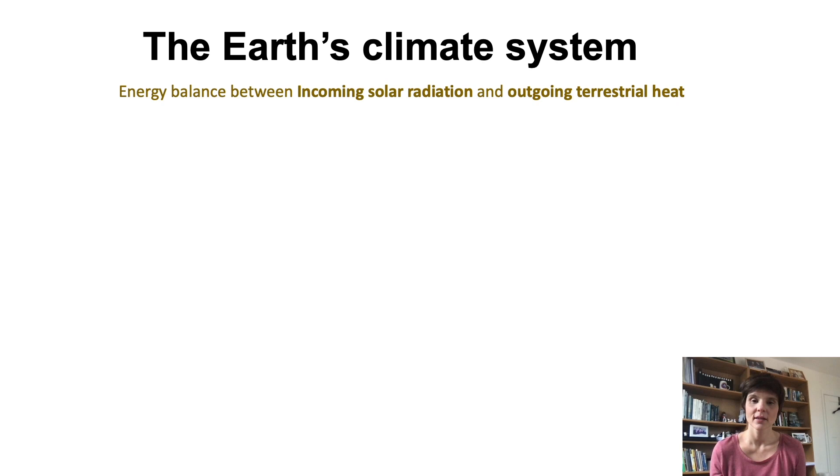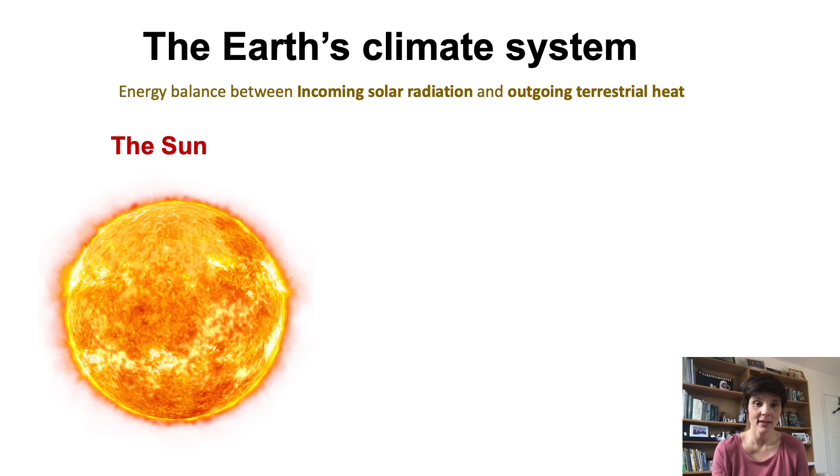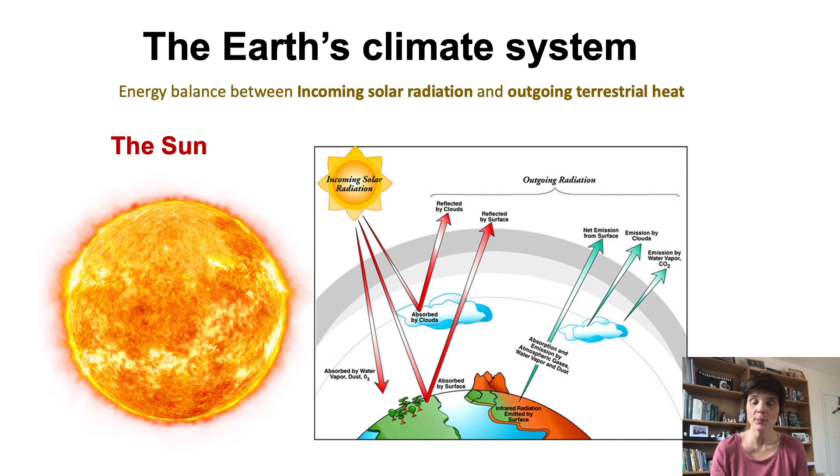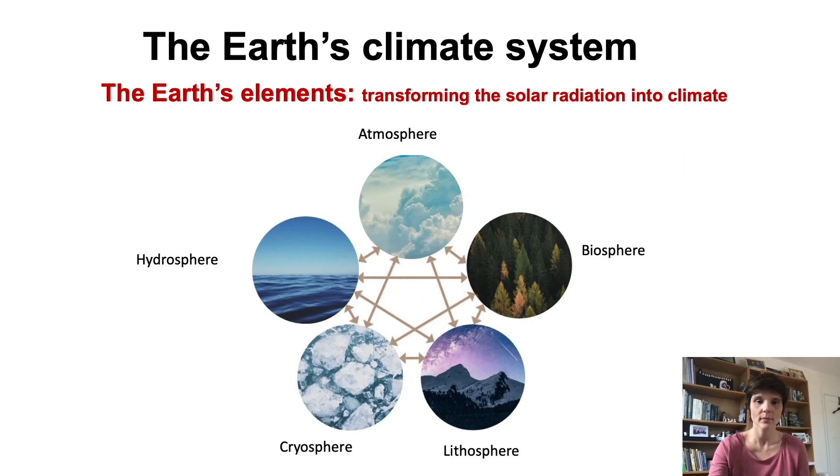The Earth climate system is an energy system which is driven by the sun. So the sun is the main source of energy, the engine of the climate. We can define the Earth climate system as the energy balance between the incoming solar radiation that is absorbed by our planet and the amount of this energy that is sent back to space. The different elements of the Earth system are the atmosphere, the ocean, forests, land and ice, and are responsible for absorbing and reflecting this energy and transforming it into climate.